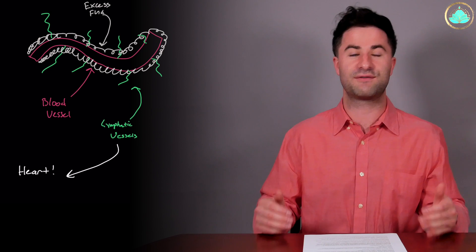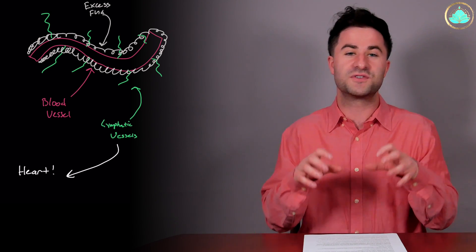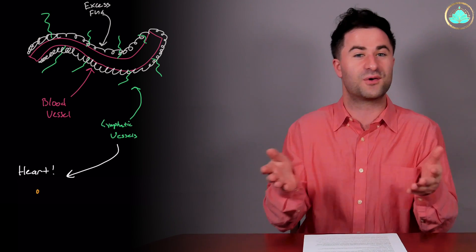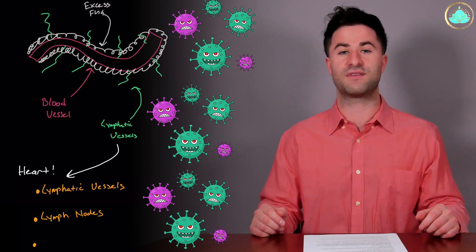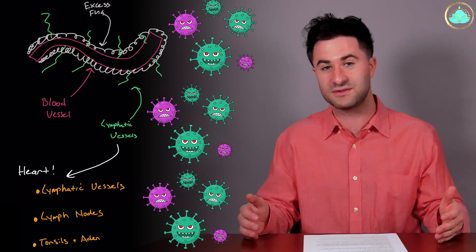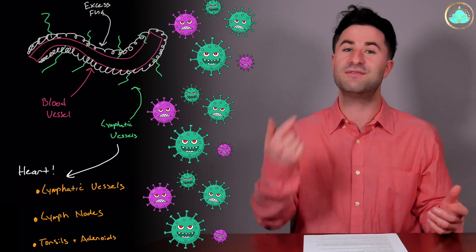It also acts as a highway for our immune system in order to scope out and see if there's any little critters that need to be eliminated. Some of the components of the lymphatic system include things like lymphatic vessels, lymph nodes, and even your tonsils.